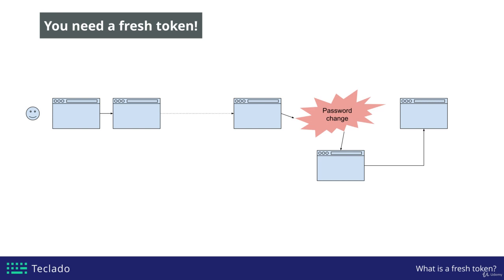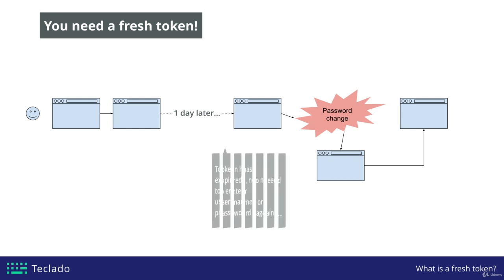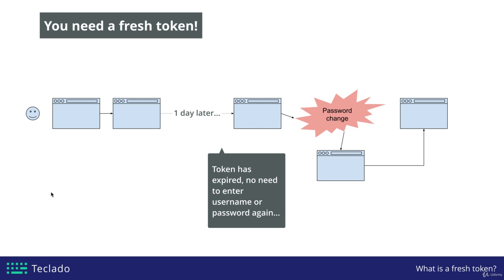So what happens is that you're already logged in but you have to enter your password again. Here's more or less the flow: you start off on the left where you log in, you enter your username and password, and what you have is a fresh token. Then you browse along, check out a couple of pages, maybe leave and come back the next day. Your initial token has expired, but the website or mobile app automatically realizes you're still logged in.